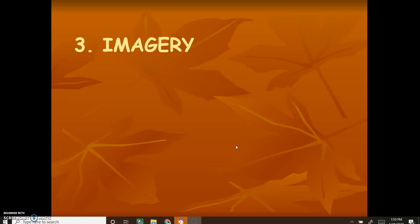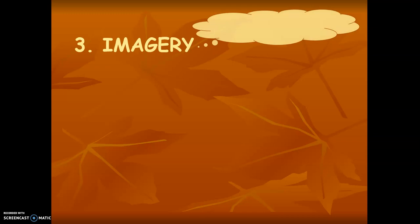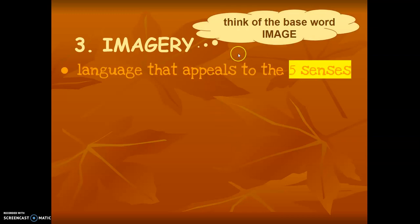So when we think of imagery, think about the base word inside of imagery. Imagery is an image. When we think of an image, I'm thinking of a picture, and if I were going to describe that picture, I would use my five senses. So imagery is language that appeals to the five senses: how something looks, how it sounds, how it tastes, how it feels, and how it smells.